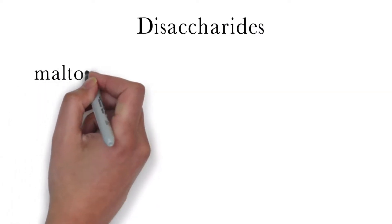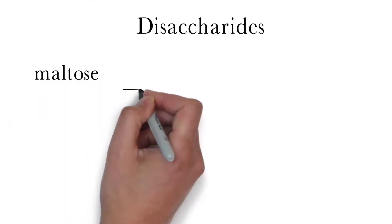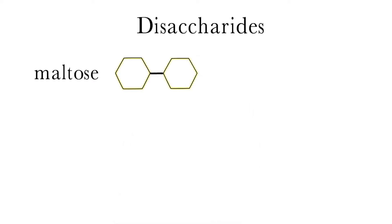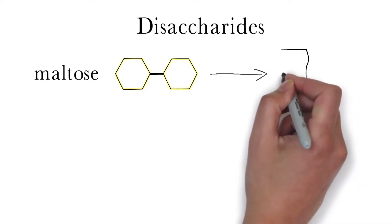The first is maltose, which is formed by linking two glucose molecules together. Maltose is produced when starch is broken down, as well as during the fermentation process that produces alcohol.